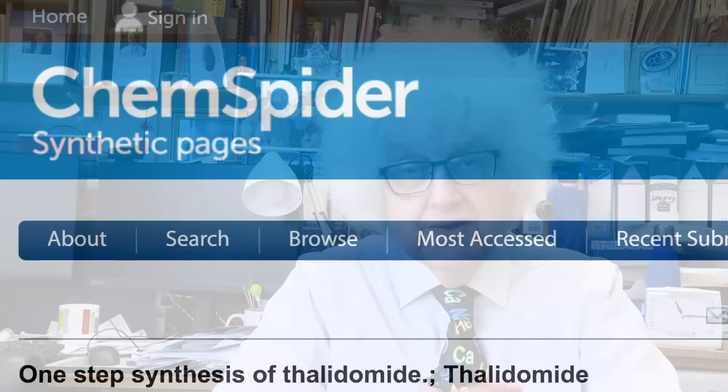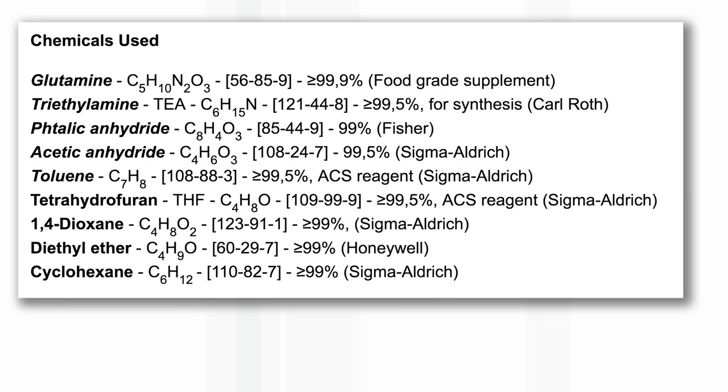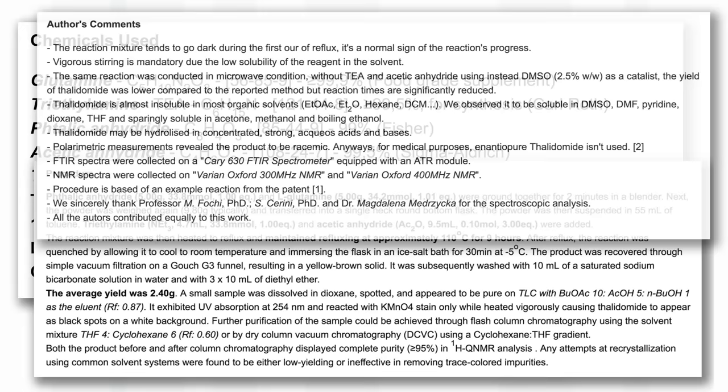What he has done is to publish, not in a journal, but on a website run by the Royal Society of Chemistry, with the name ChemSpider. Nothing to do with spiders, so don't be frightened. And on ChemSpider, it gives what is considered very reliable information about chemicals, their properties, and making them. And he, Eduardo, has developed a simple synthesis for making a drug called thalidomide.